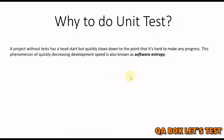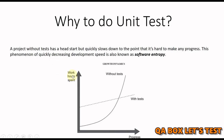Why do unit testing? Looking at this graph: the y-axis represents work hours spent and the x-axis represents progress. One curve represents a project without tests and one represents with tests. A project without tests has a head start but quickly slows down to the point where it is hard to make any progress and hard to maintain the software. This phenomenon of quickly decreasing development speed is also known as software entropy. It is important to write test cases — not just for the sake of it, but to understand what we have to test so we can write good test cases.